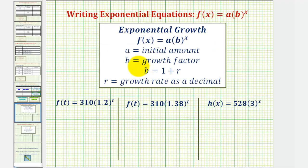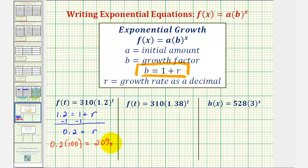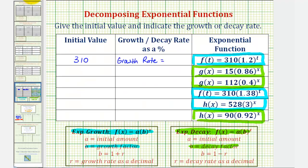For exponential growth, the base B, or growth factor, equals one plus R. For our first equation, B equals 1.2, so we have 1.2 equals one plus R. Subtracting one on both sides gives us R equals 0.2. This is the decimal form of the growth rate, but we want it as a percentage. Multiplying by 100 gives us 20 percent, so our first equation has a growth rate of 20 percent.